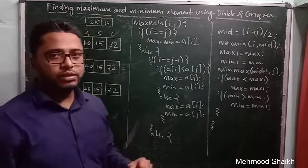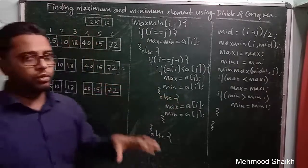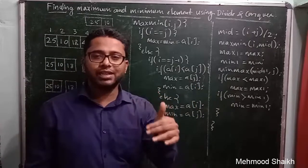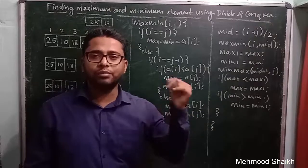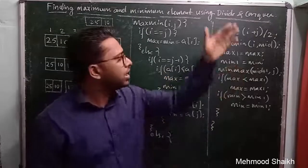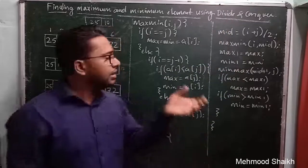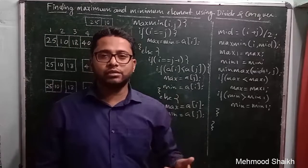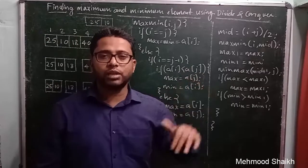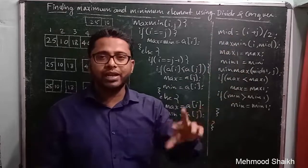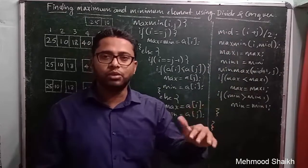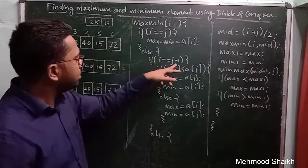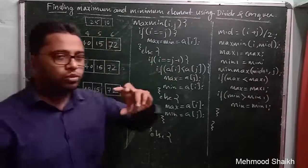First, the base case: if i equals j, you have only one element, so maximum and minimum will be the same element. In the else block, what if you have more than one element? If you have two elements such as 25 and 10, the problem is still small and you don't need to apply divide-and-conquer.